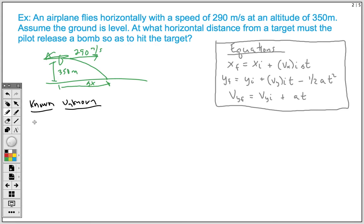The two obvious variables that we know would be our horizontal velocity. So that's labeled as VXI, and we know that we're traveling at 290 meters per second. We also know what our altitude is, in other words, our height. And so our height, that symbol is YI, and that's 350 meters.